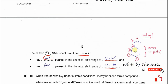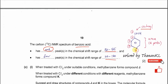Similar to methylbenzene, the benzene ring in benzoic acid produces four peaks. The ipso carbon gives one peak, the two ortho carbons give one peak, the two meta carbons give one peak, and the para carbon gives another — therefore four peaks total.